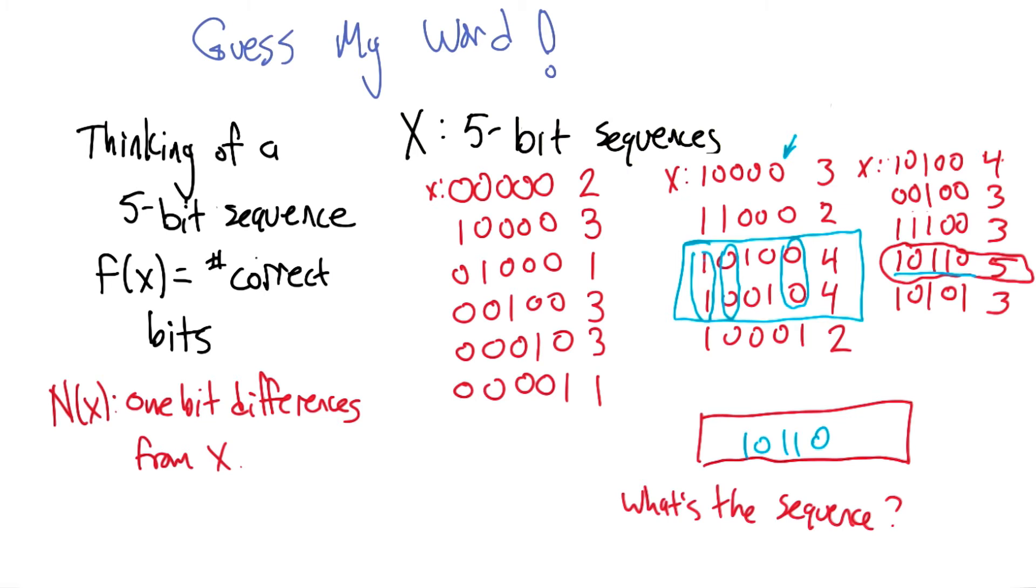But if this were a 5,000 bit sequence, where the fitness function was some weird thing. Where, in fact, we didn't even know what it was. We just knew that there was one. Then that would have been a whole lot harder.